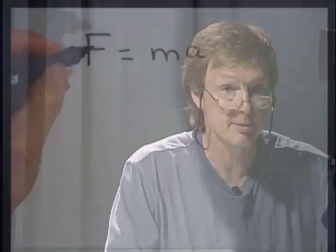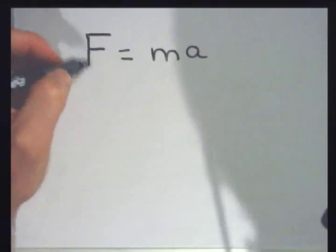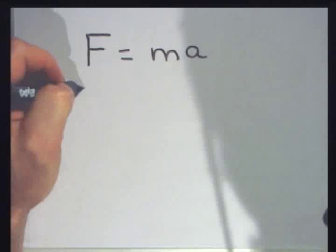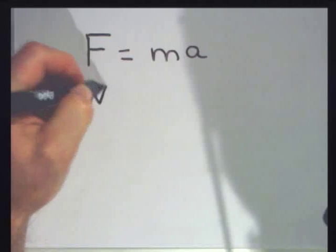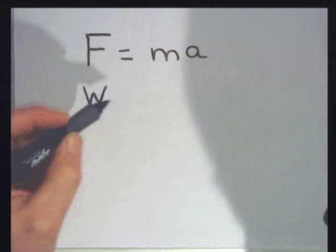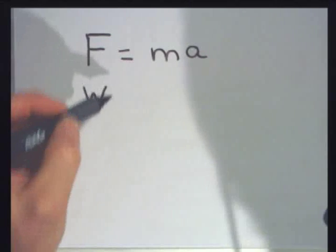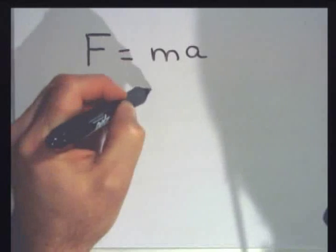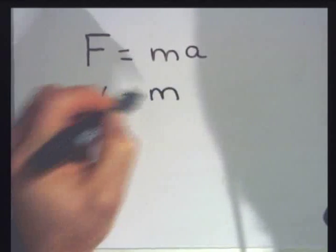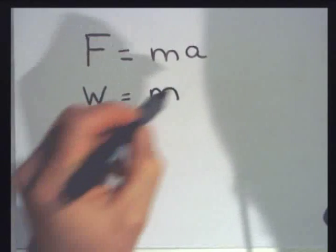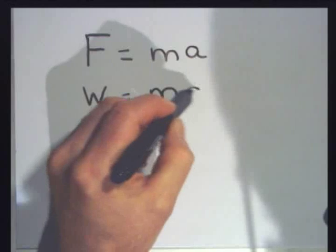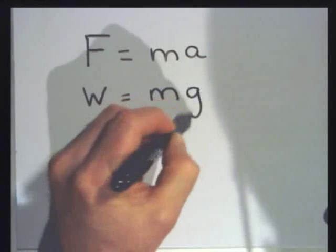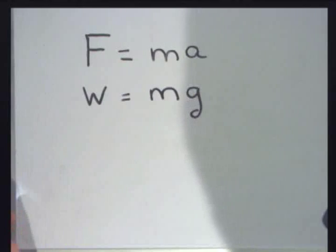Let's write this down. We've got force is mass times acceleration. Weight, like I said, is a special kind of force given by a small w. And that's equal to mass times a special acceleration, which is called g, which is the acceleration due to gravity.